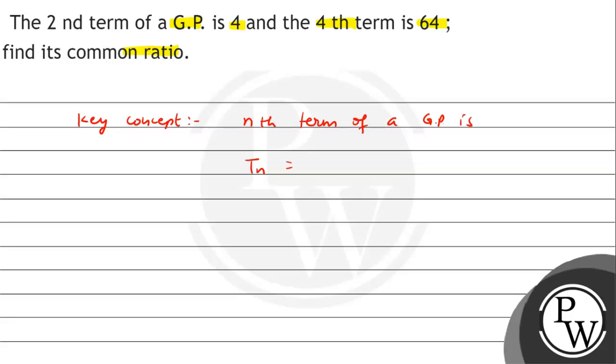tn = ar^(n-1), where a is the first term, r is the common ratio, and n is the number of terms. The second term is 4.